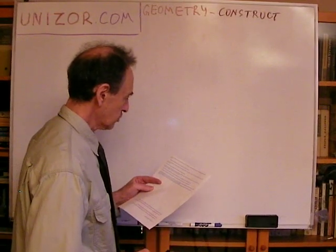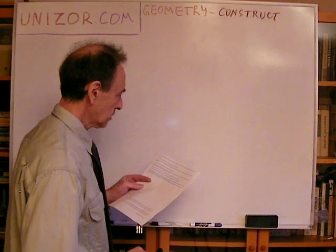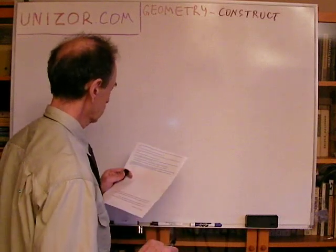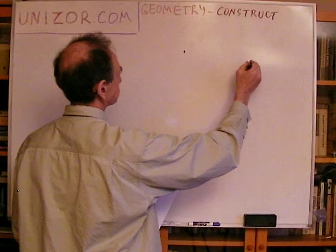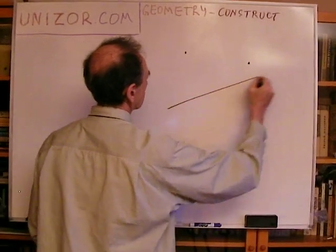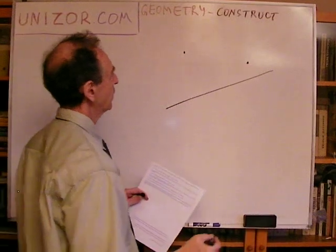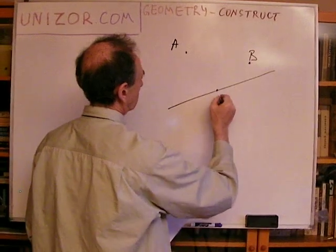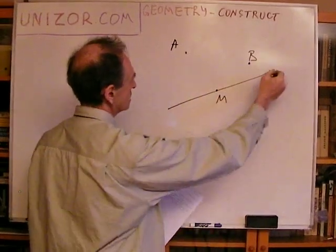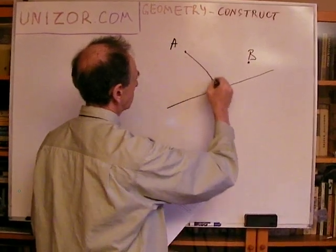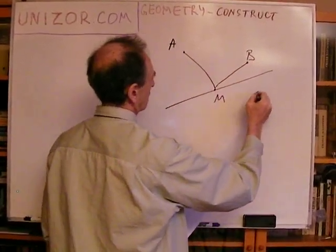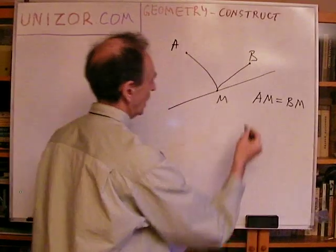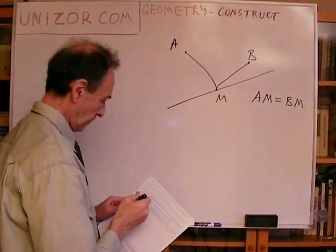Given a straight line and two points anywhere on the plane, construct a point on the given line equidistant from the two given points. So you have two points and some kind of a line on the plane. What I have to find is the point M on this line such that AM equals BM — the lengths of these segments.